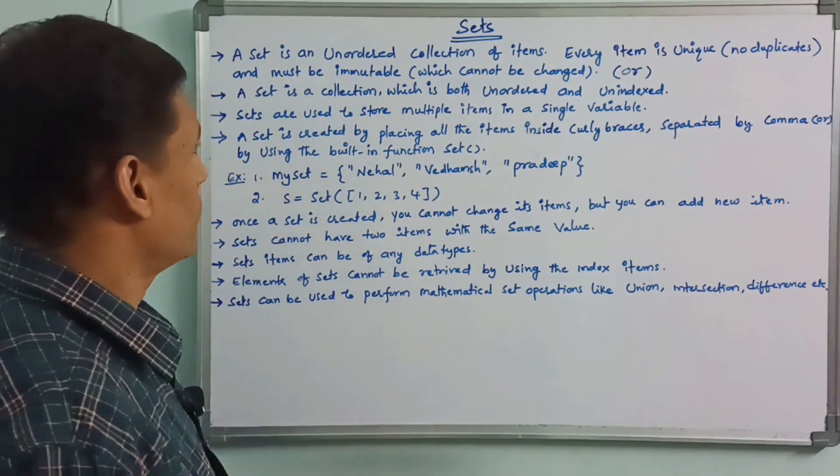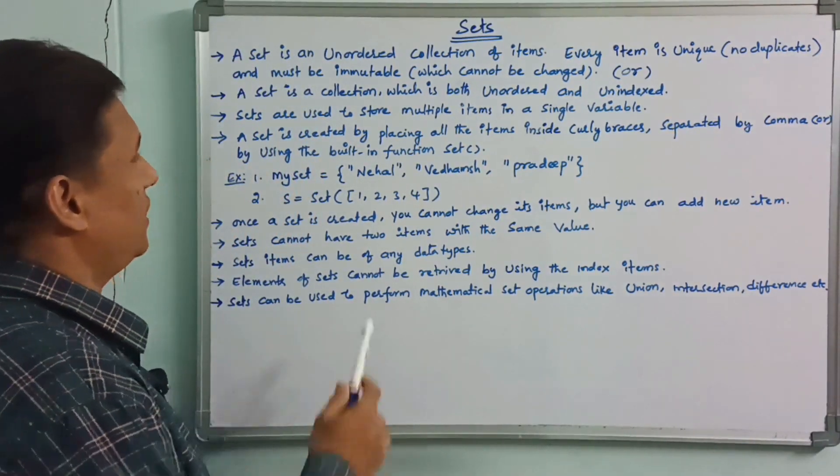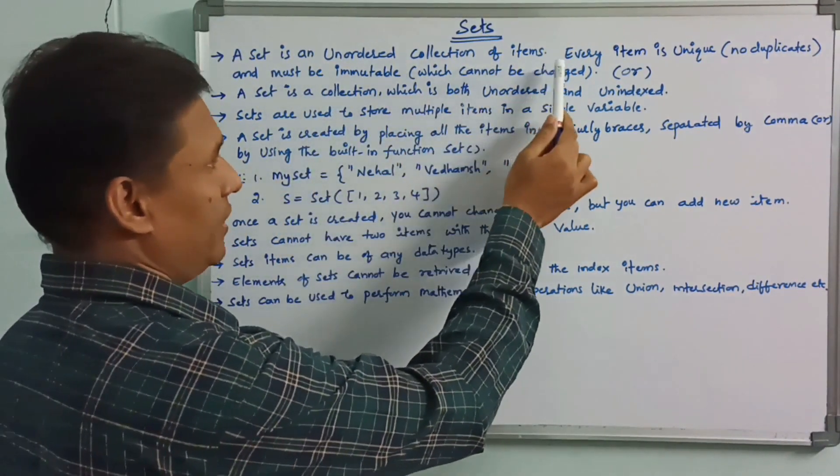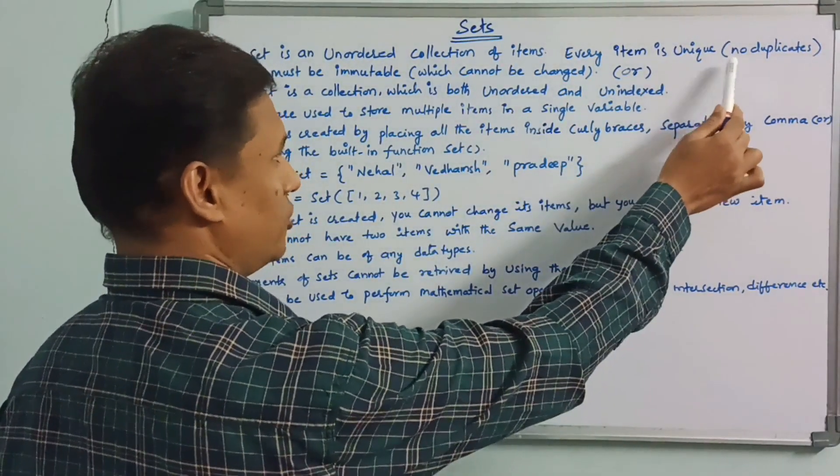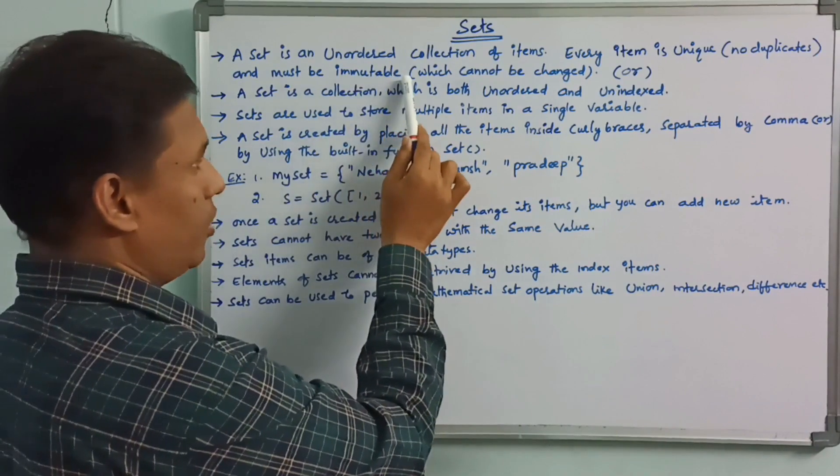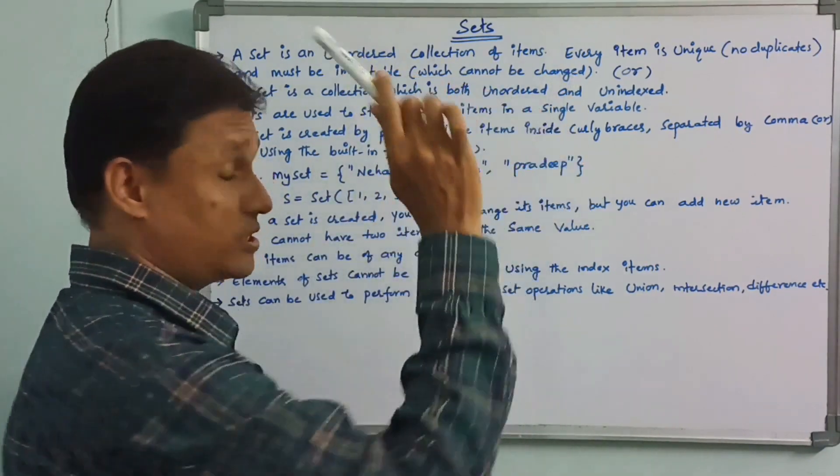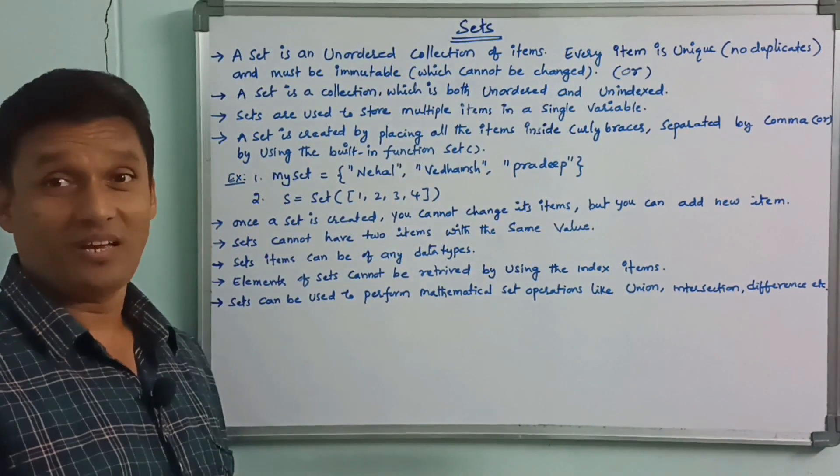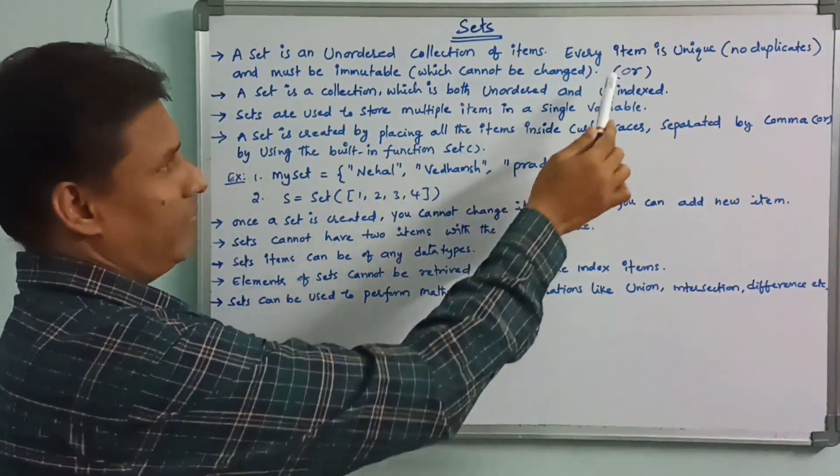First of all, set is an unordered collection of items. Every item is unique. Unique means no duplication and must be immutable. Immutable means which cannot be changed.